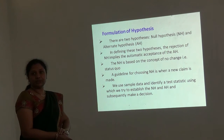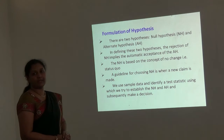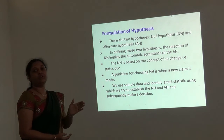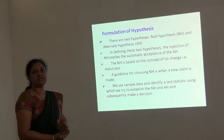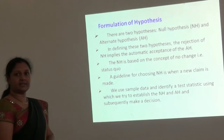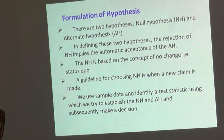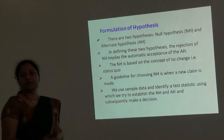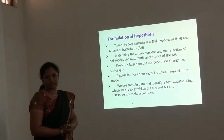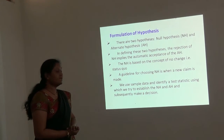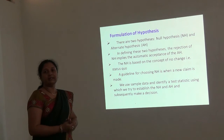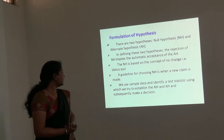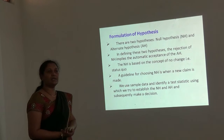Coming to the formulation, as I told you earlier, we have to first set up the null hypothesis which is denoted by H0 and the alternate hypothesis denoted by AH. In defining these two hypotheses, the rejection of null hypothesis automatically implies the acceptance of the alternate hypothesis. The null hypothesis is based on the concept of no change. For example, in the earlier drug experiment, we assumed the null hypothesis to be P equal to 0.5 because that is what we have from prior experience — that 50% are getting cured. The guideline for choosing null hypothesis is when a new claim is made, such as when a new drug has come into the market, then comes the alternate hypothesis. We use the sample data and identify a test statistic which is suitable and try to establish null and alternate hypothesis and subsequently take a decision.